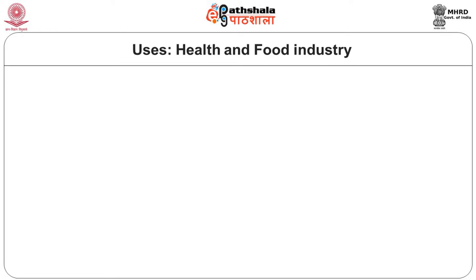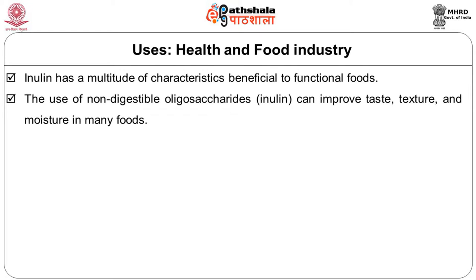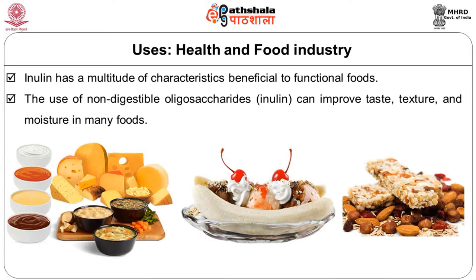In health and food industry uses, inulin has a multitude of characteristics beneficial to functional foods. The use of non-digestible oligosaccharides — that is inulin — can improve taste, texture and moisture in many foods. Inulin has gelling characteristics that can be used to make low-fat cheeses, sauces, soups and table spreads. Its melting properties allow for easy processing of frozen desserts. Binding characteristics allow inulin to be used in cereal bars. Additionally, as a fructan, inulin can be substituted for sugar when reduced sugar content is desirable, which is very useful in prevention or management of diabetes.